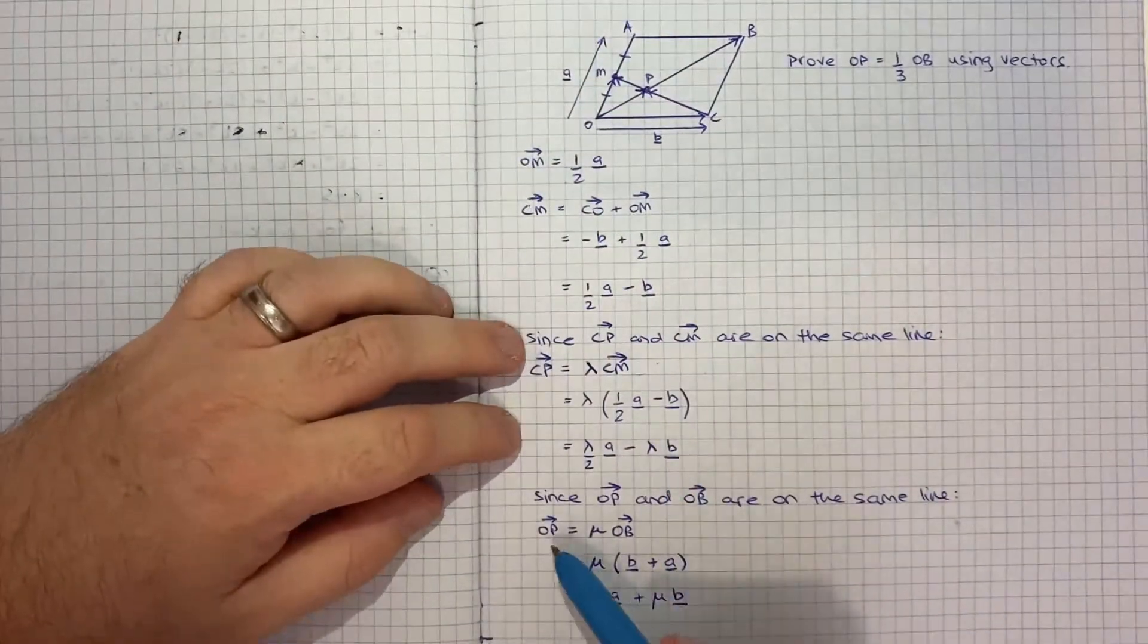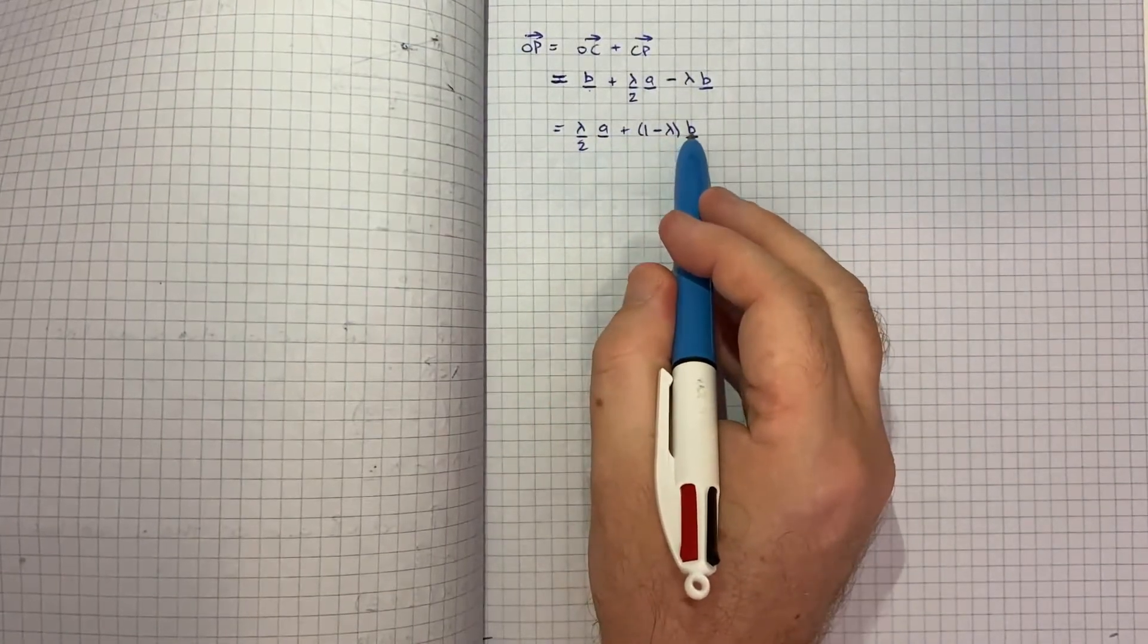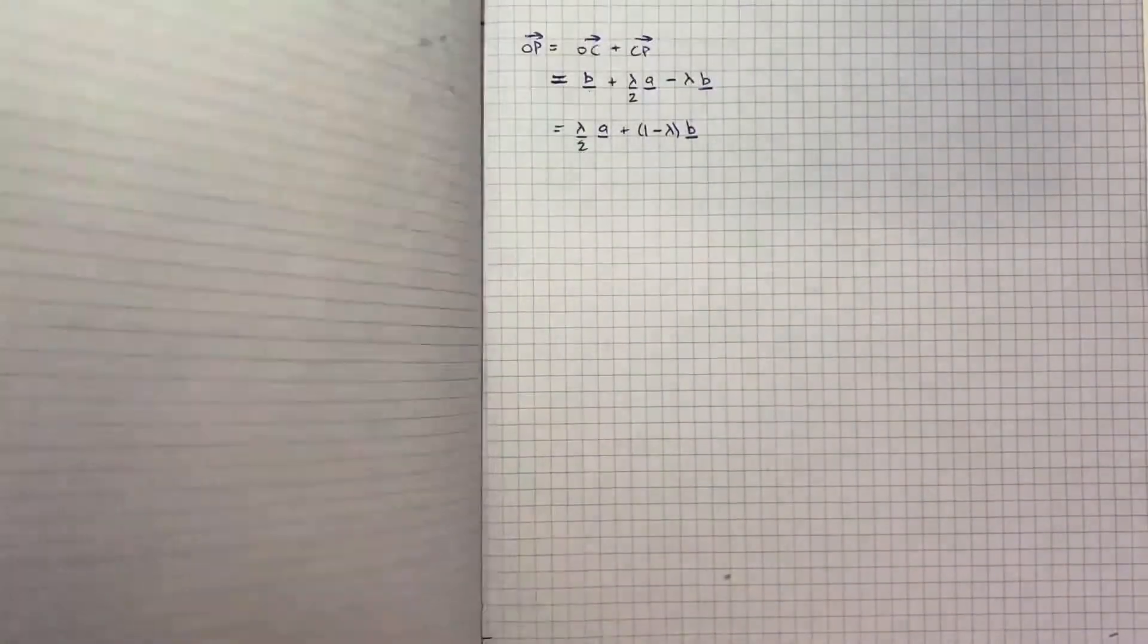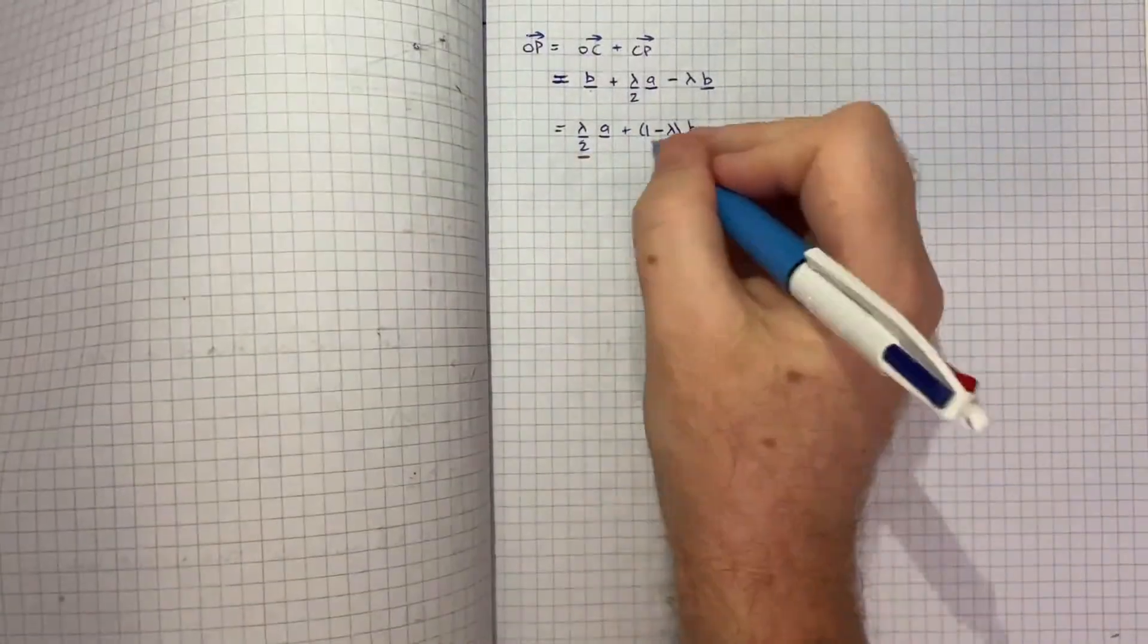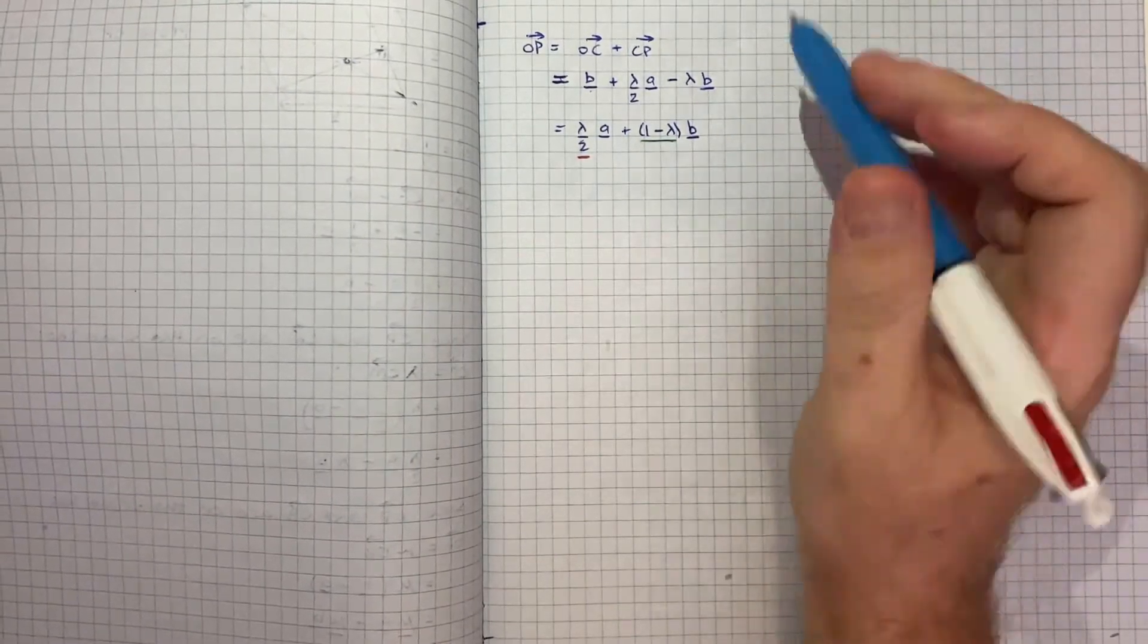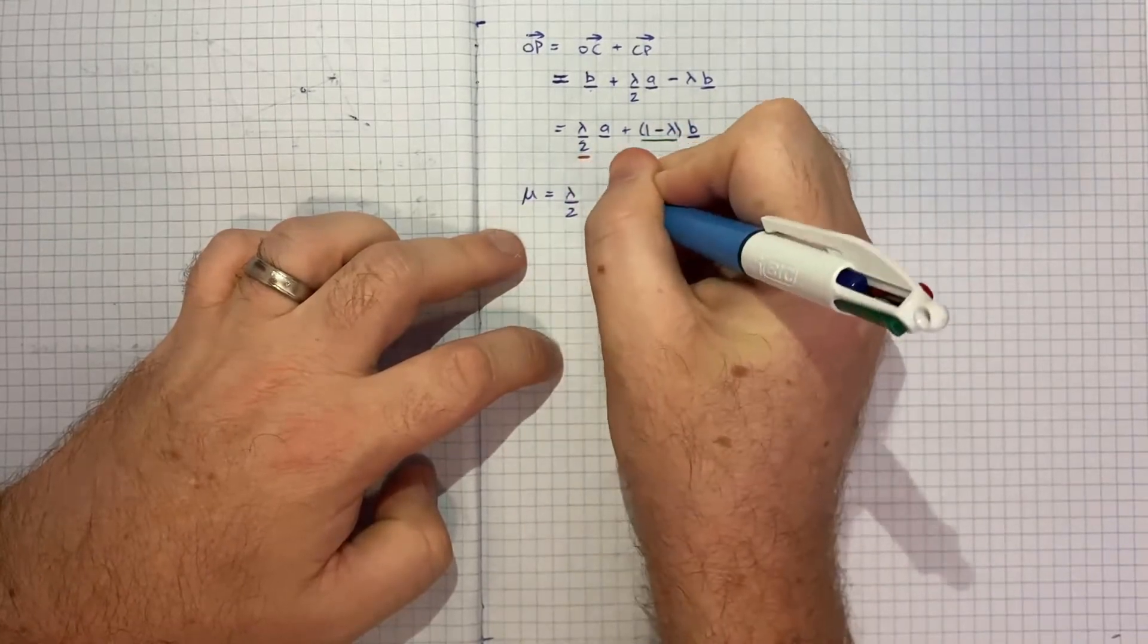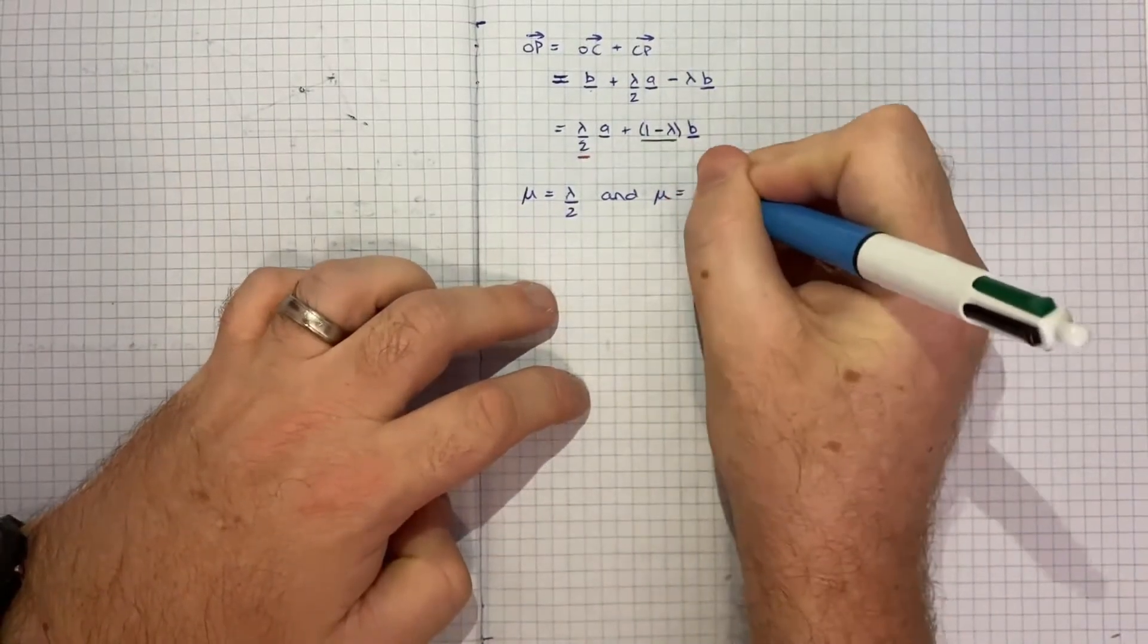And now what you might notice is we've got OP vector in two forms. Both of them being something times A vector plus something times B vector. So we can set those equal. So I could say what's in front of the A vector here must be the same as what's in front of the A vector here. And what's in front of the B vector here must be the same as what's in front of the B vector here. And again, I think this might not be something that jumps out to a lot of three unit students. So it makes it difficult, but not technically impossible. These are still three unit techniques. So what I can say is that mu is equal to lambda onto 2, and it's also the case that mu, which is in front of B vector, is equal to 1 minus lambda.